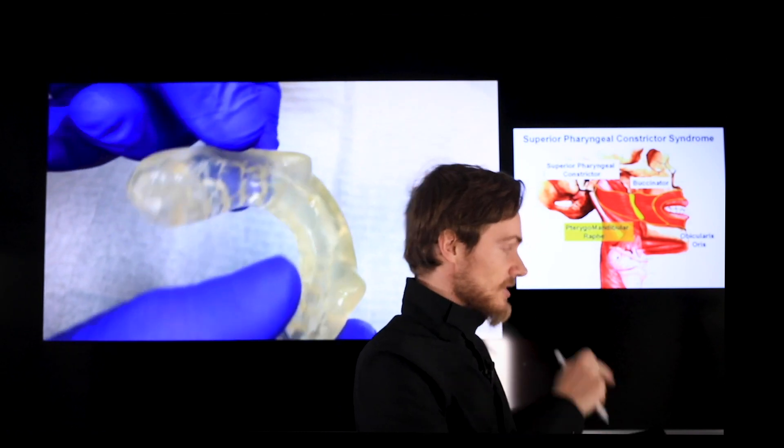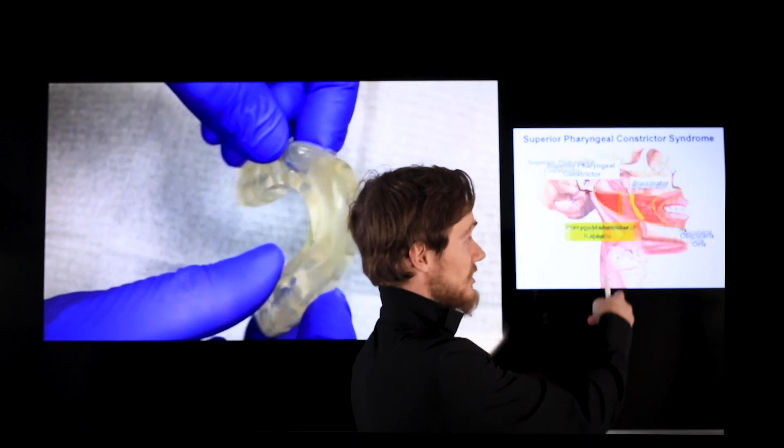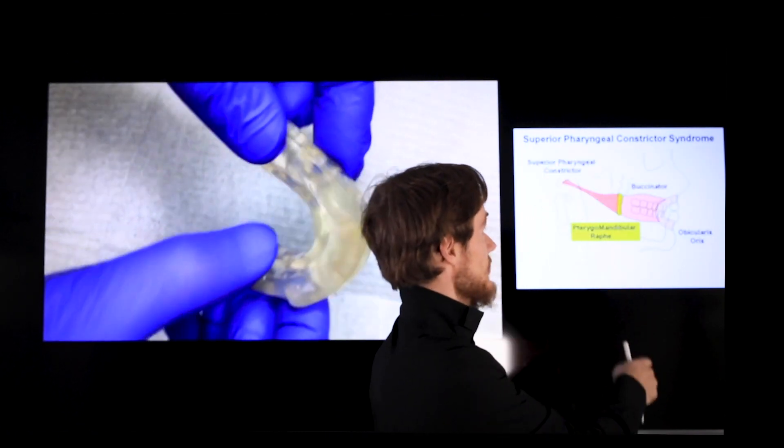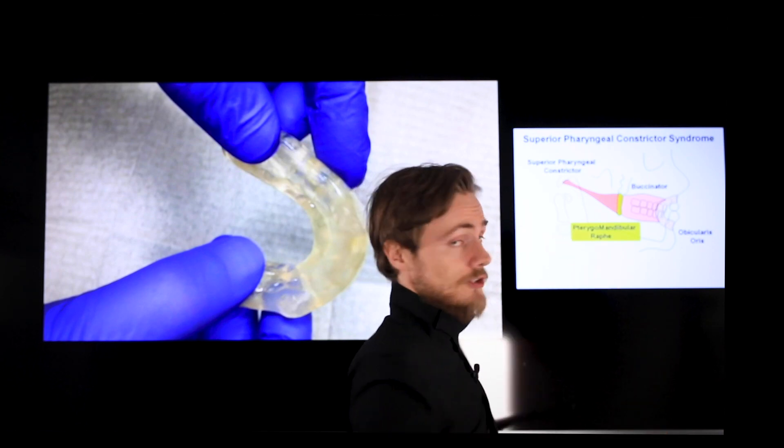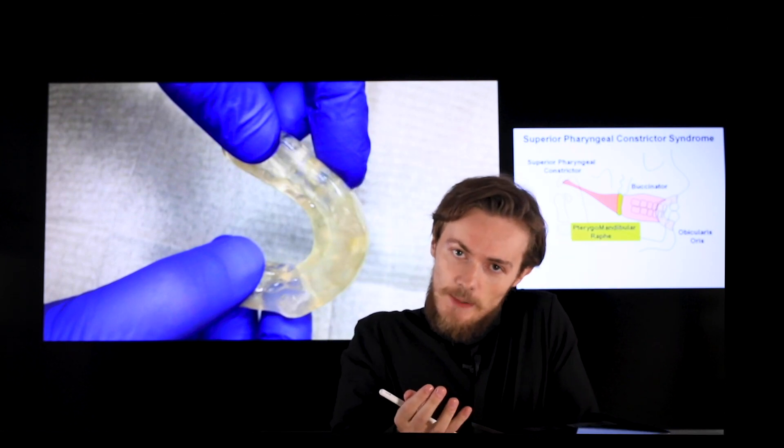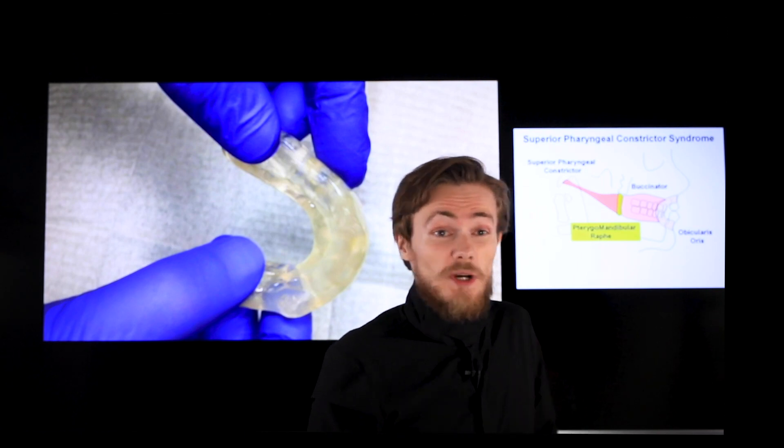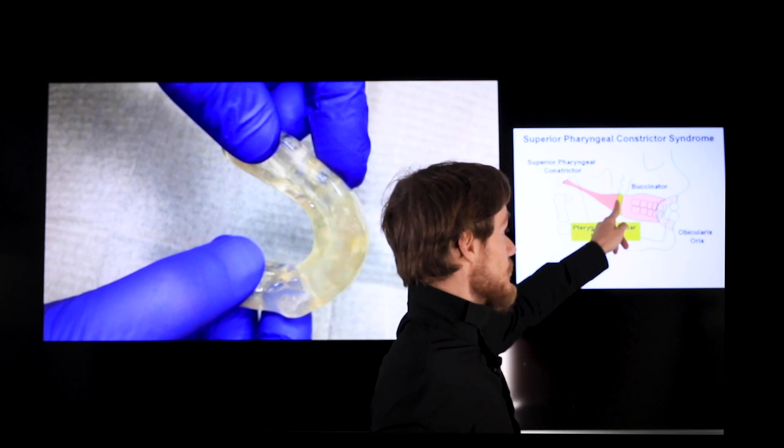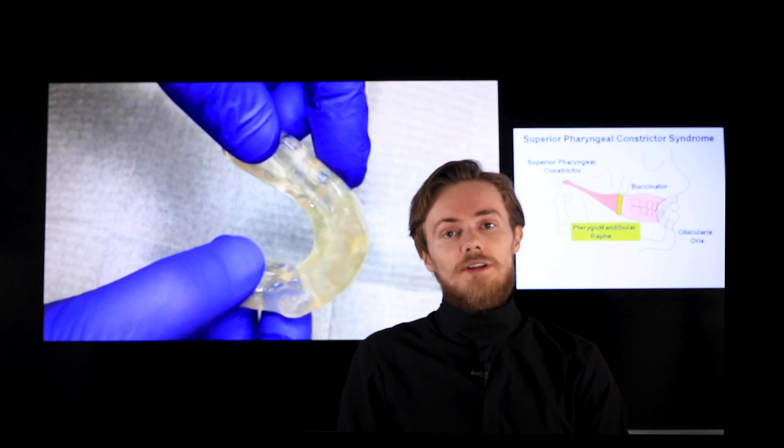When you have the orbicularis oris muscle and this muscle is tensed, you also have the buccinator, you also have superior pharyngeal constrictor muscle. And these all muscles, they pull the jaw backward. This is why my physiotherapist is working on this raphe in here to make it more relaxed.